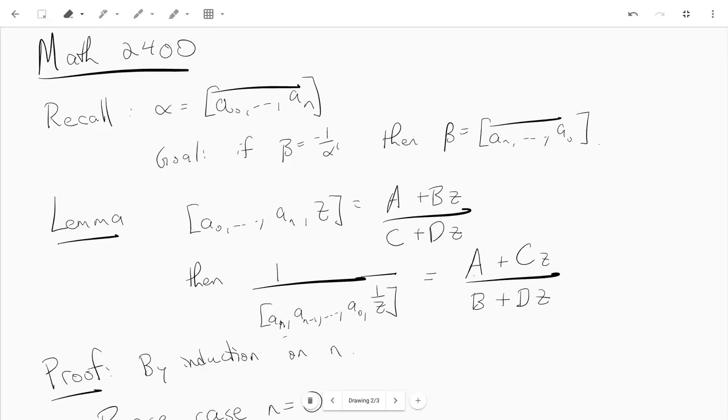Hi guys, this is just a quick video for Math 2400. I'm trying to go back and tidy up some loose ends we saw on Thursday. Basically we're looking at the continued fraction, or like a periodic continued fraction, like a0, a1, all the way up to an, repeating.